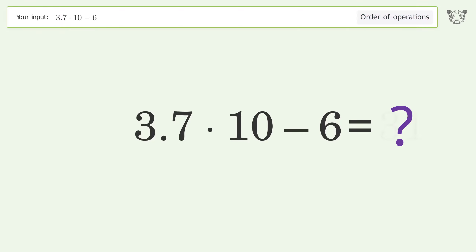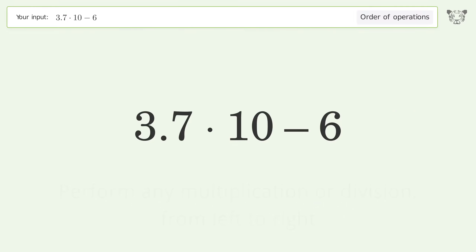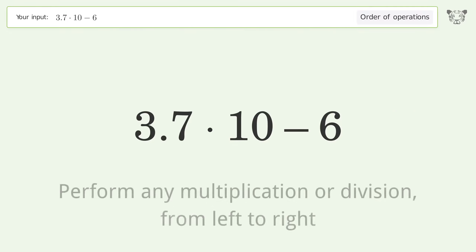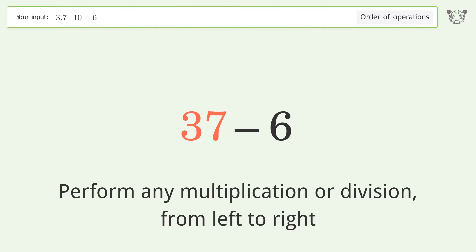You asked Tiger to calculate this. It deals with the order of operations — the final result is 31. Let's solve it step by step.